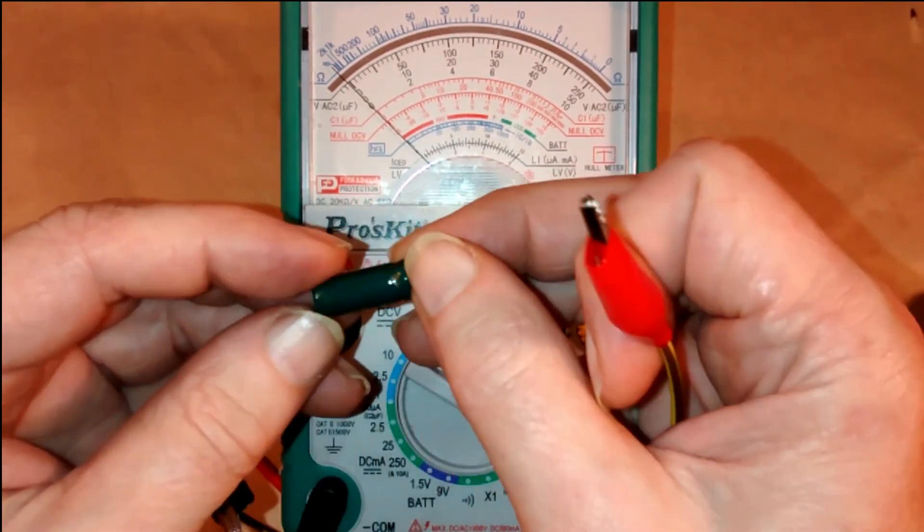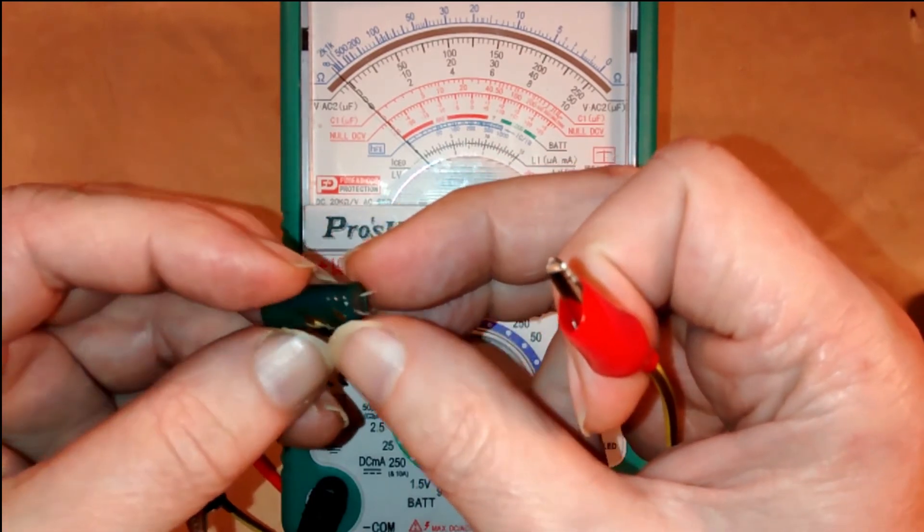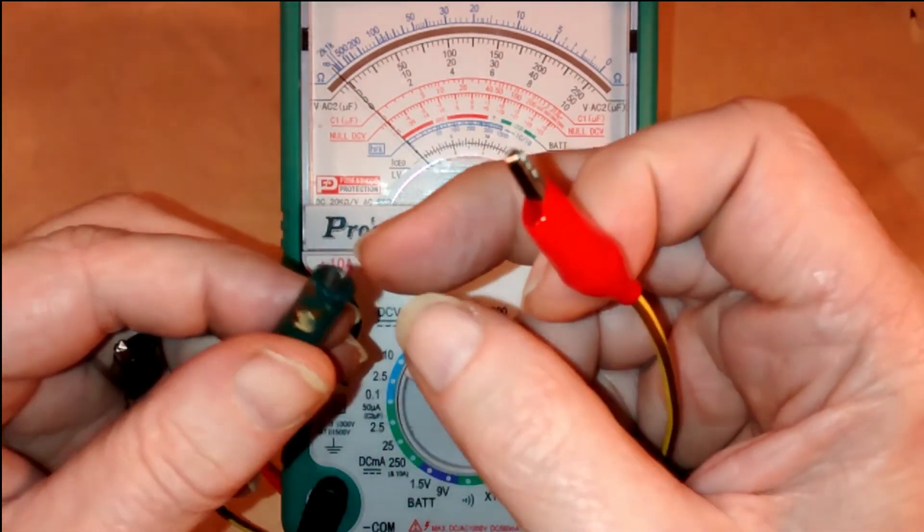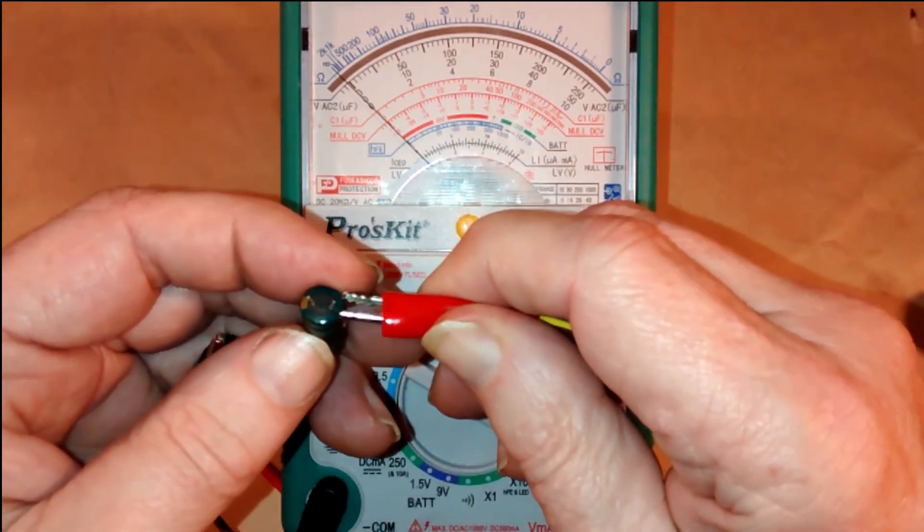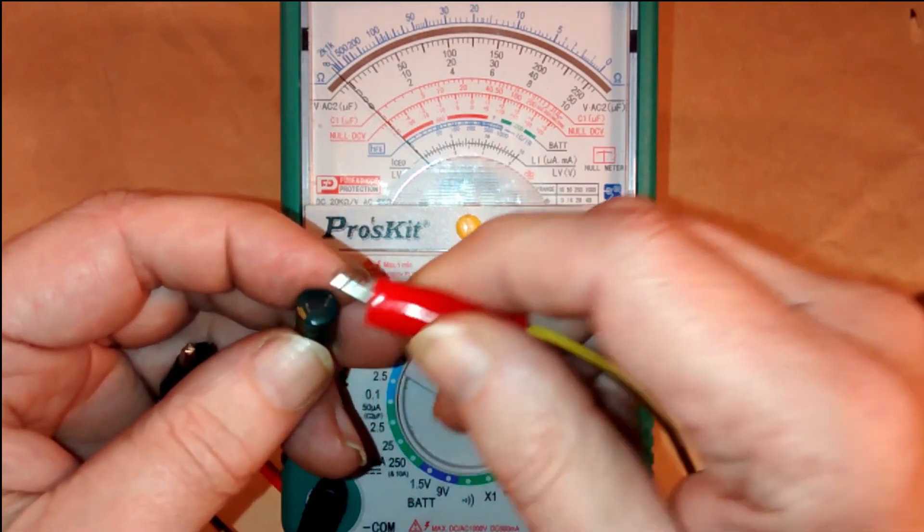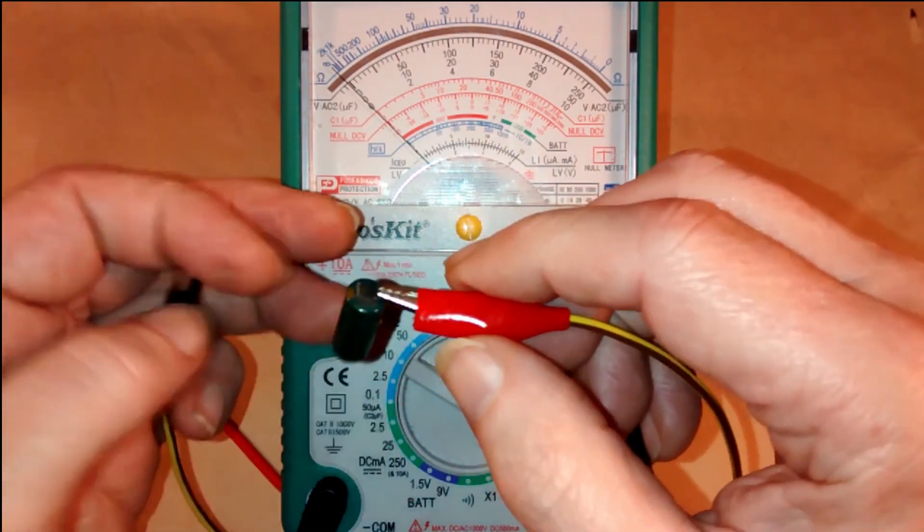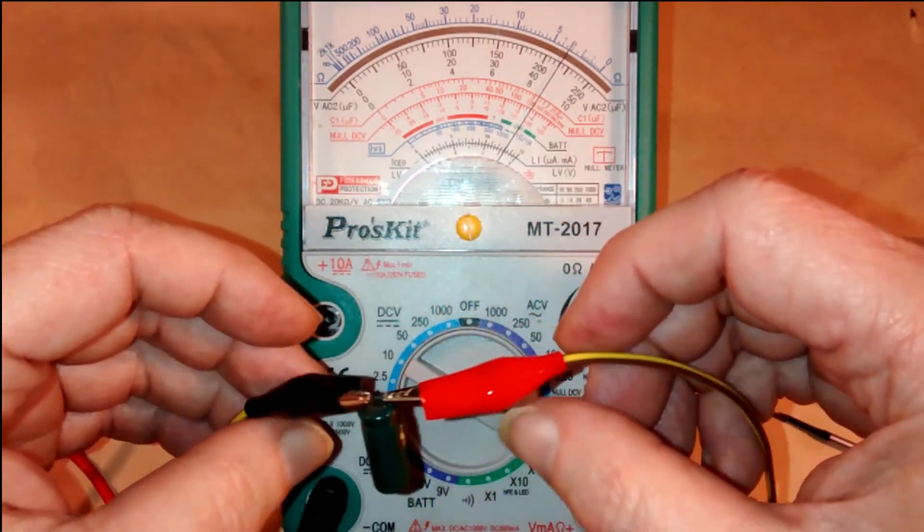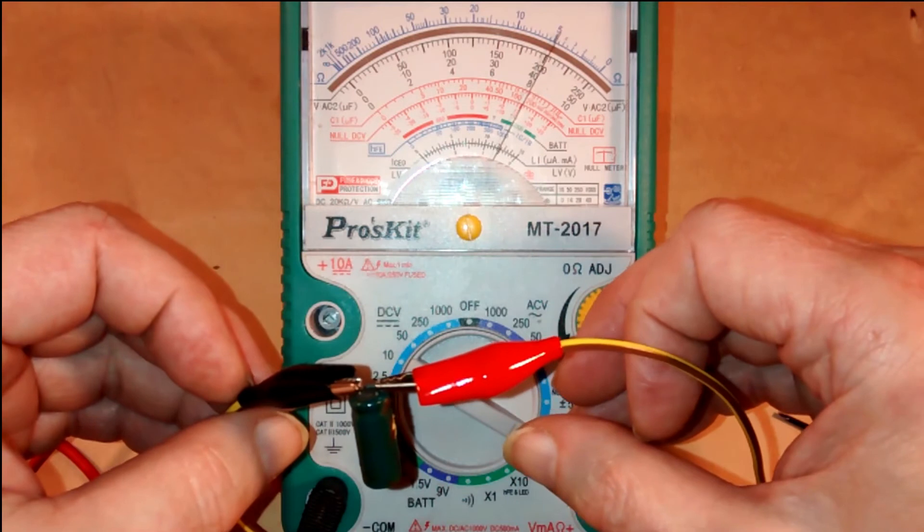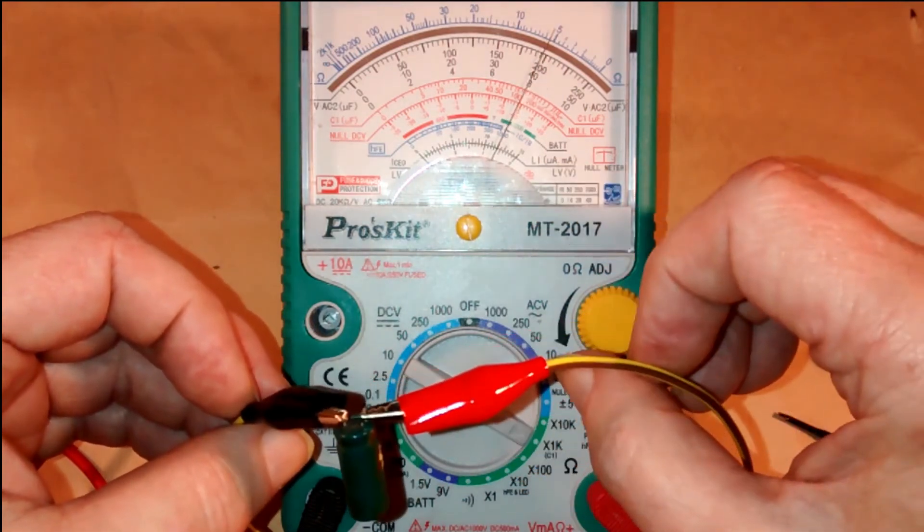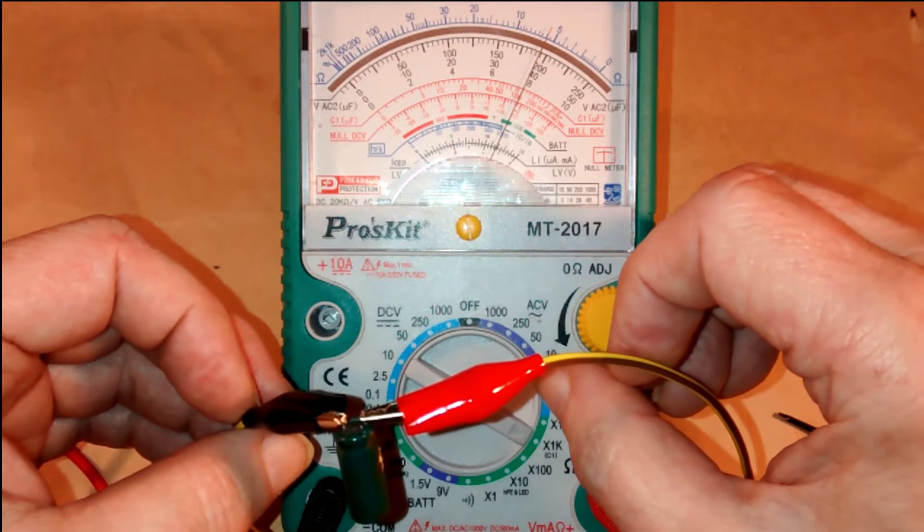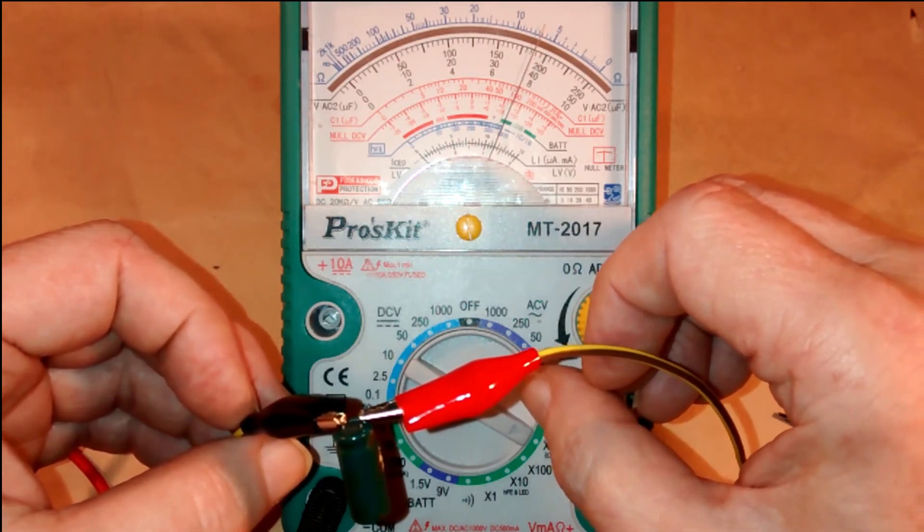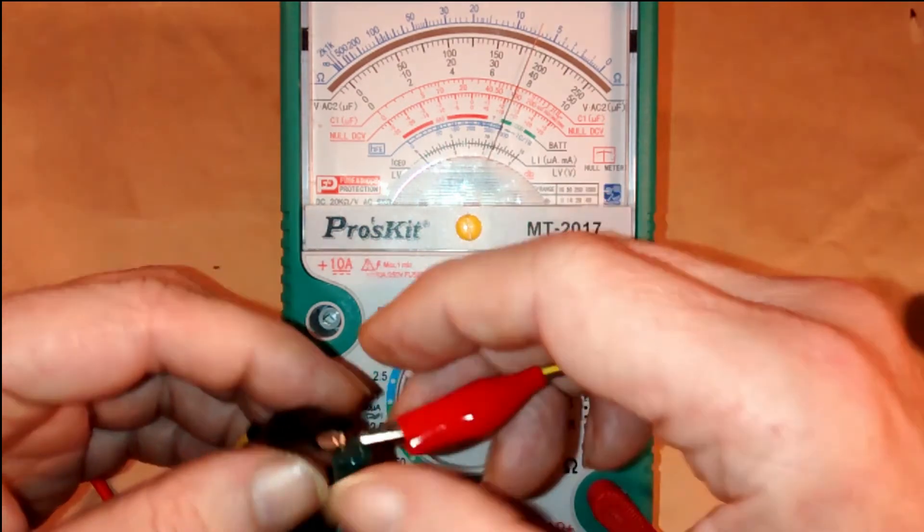This one comes from a power supply that did actually fail. It's a 10 volt, 1000 microfarad. Shunt it out first. Positive, negative. And again, you see the needle doesn't move very far before it stops. So again, that one's a fail.